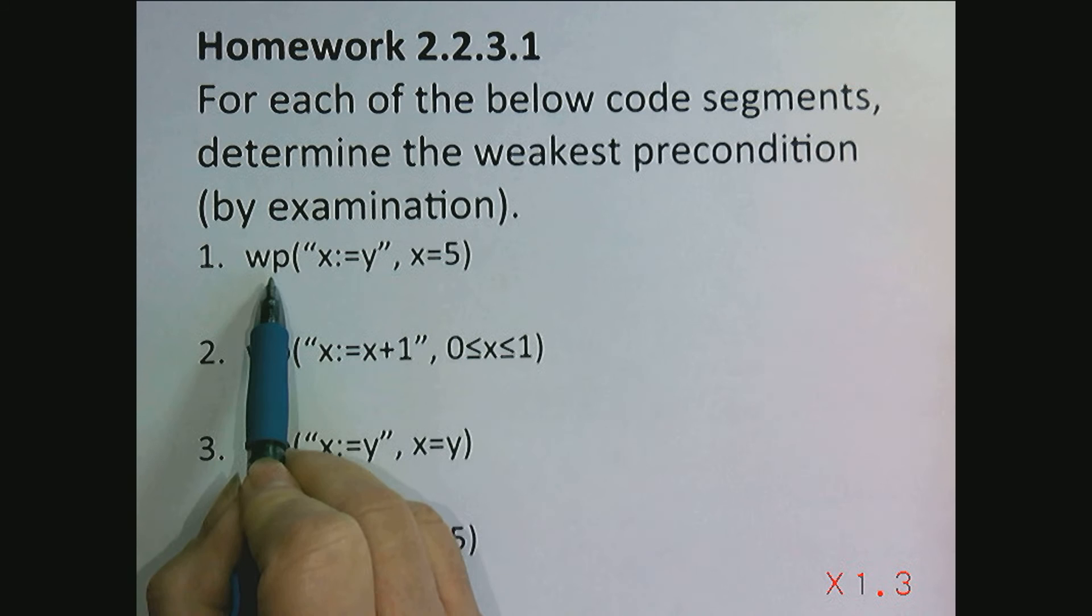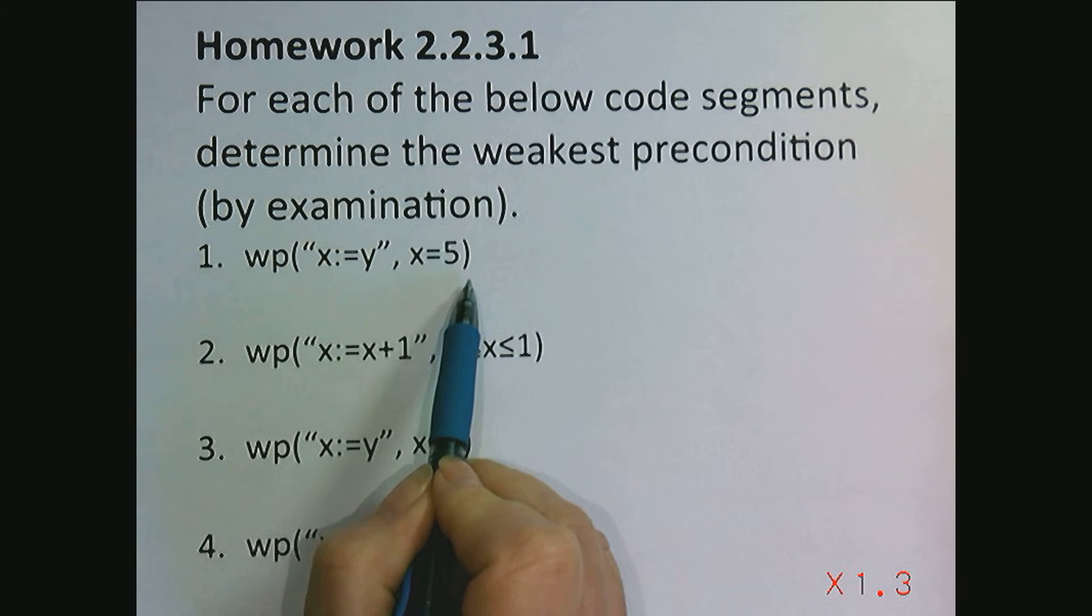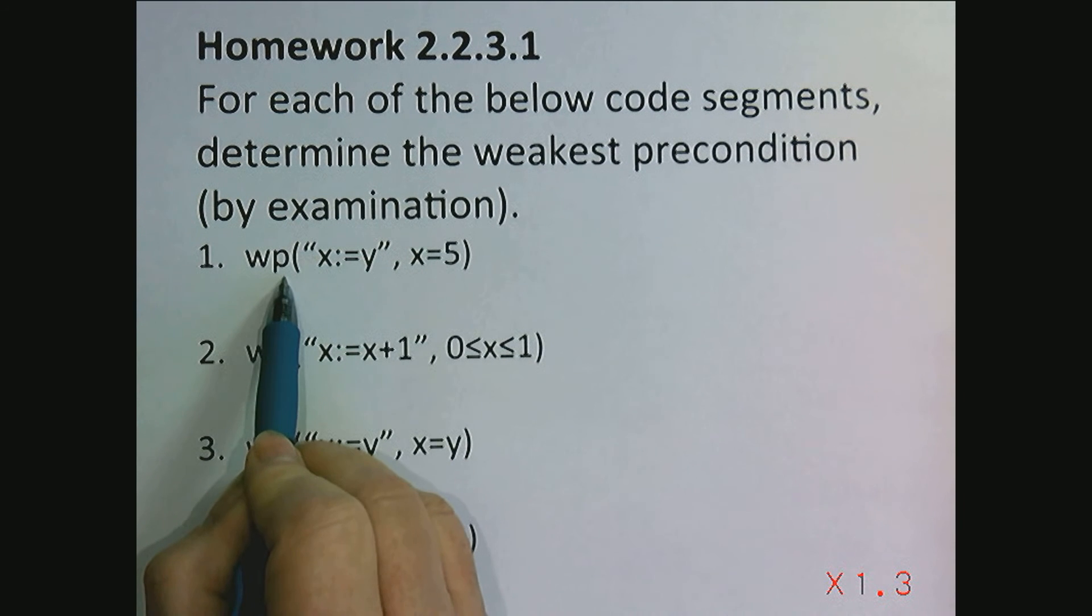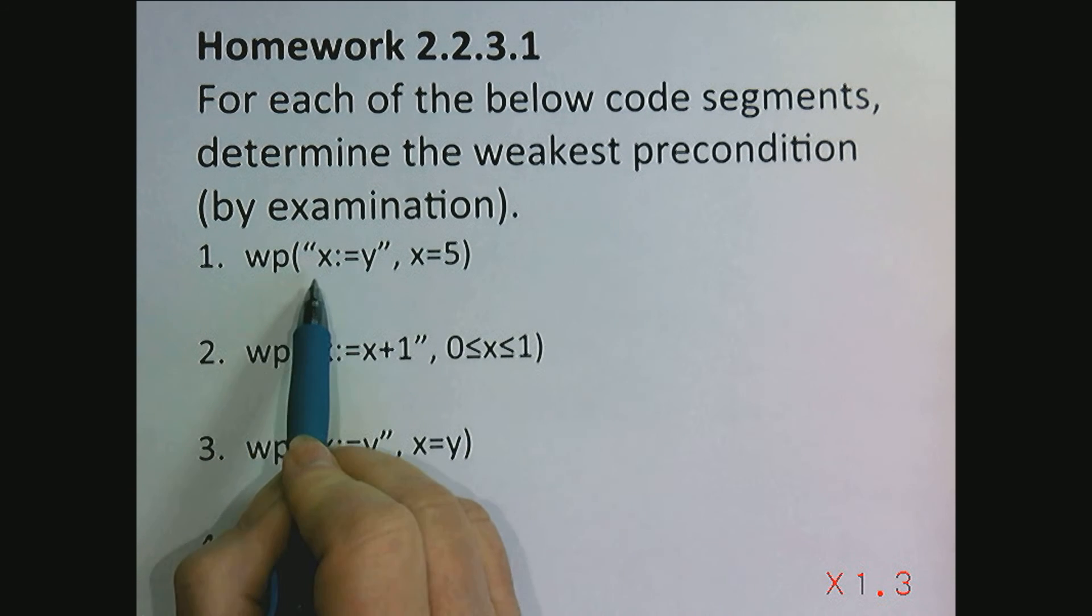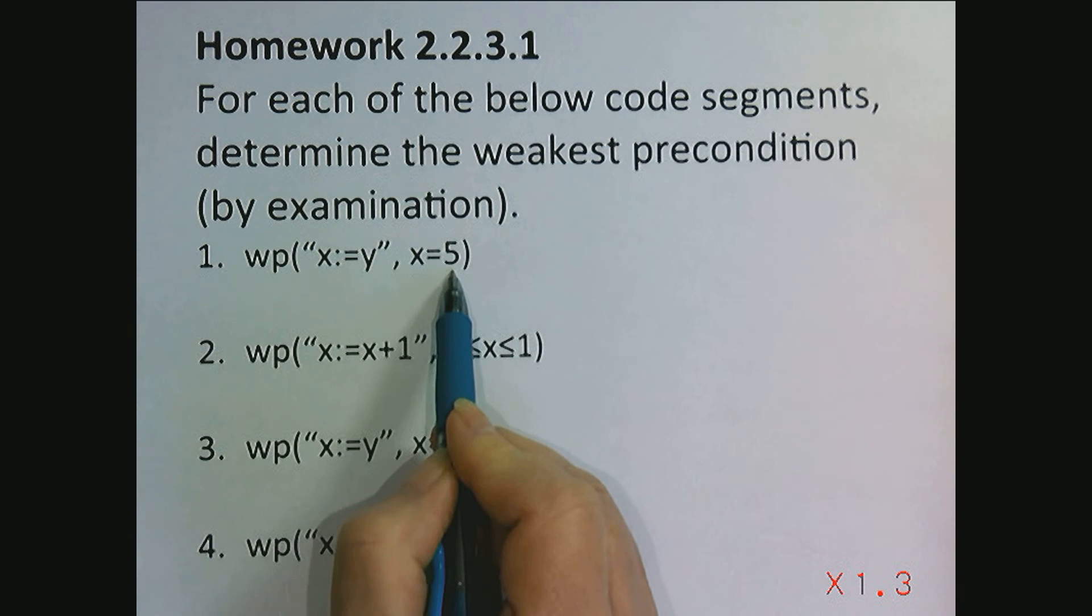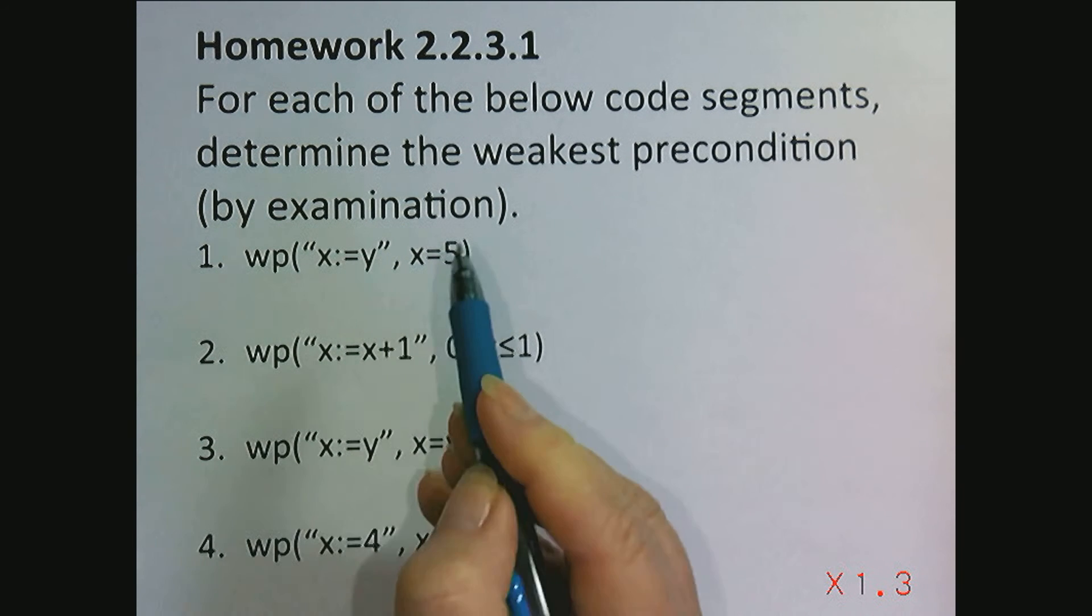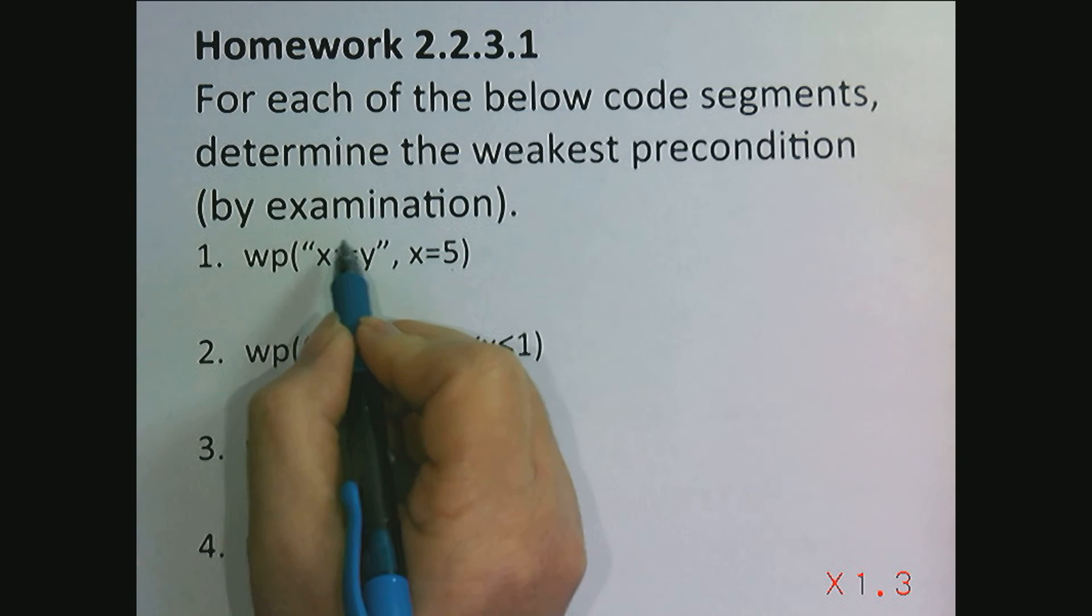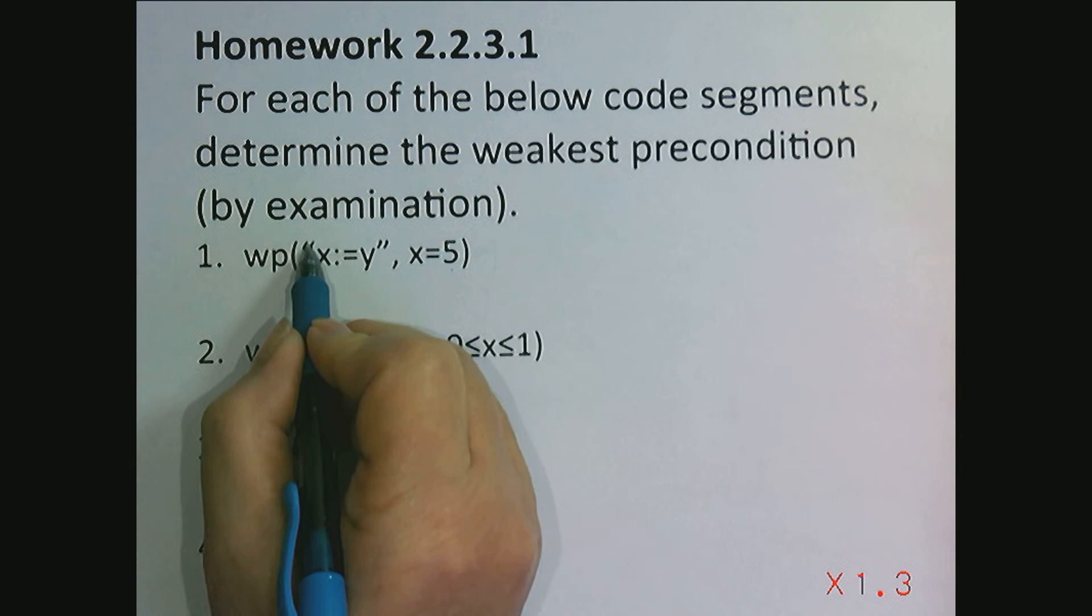To start off, I want to look at notation. Weakest precondition is a function that inputs a command and a predicate that's the post condition. To identify the command, we put quotes around it.